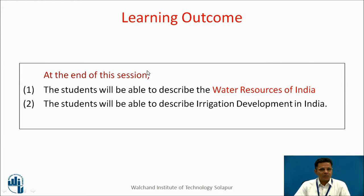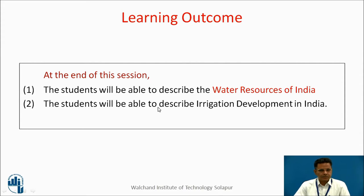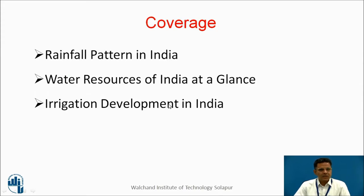Learning outcomes of this session: the students will be able to describe water resources of India. They will be able to describe irrigation development in India. Coverage includes rainfall patterns in India, water resources of India at a glance, and irrigation development in India.